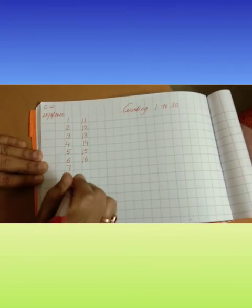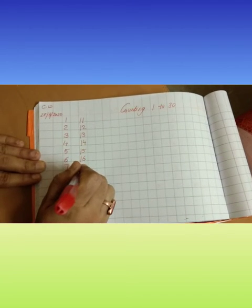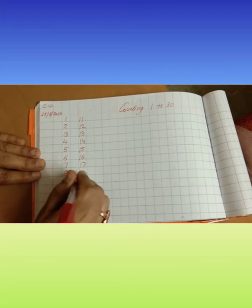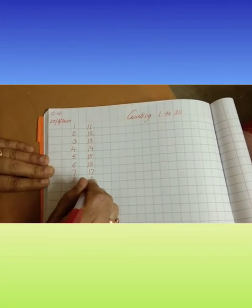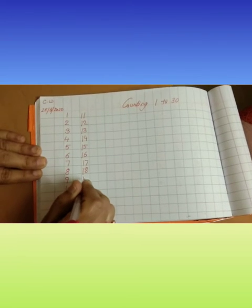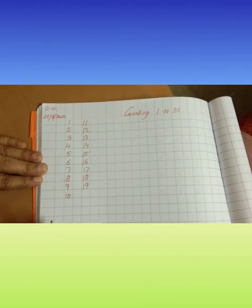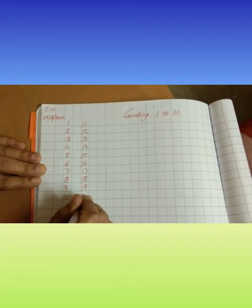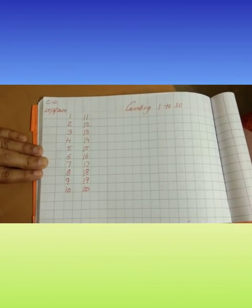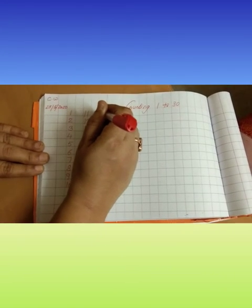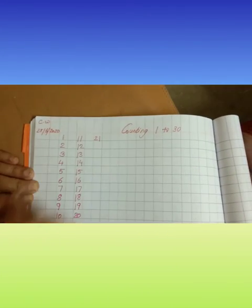1 and 6, 16. Keep going children. 1 and 7, 1 and 7, 17. 1 and 8, 1, 8, 18. 1 and 9, 1, 9, 19. 2 and 0, 2, 0, 20.